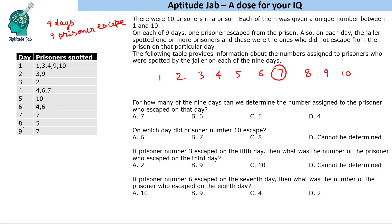Now if you look at the 8th day, prisoner 5 was spotted. That means 5 will not escape on the 8th day, but 5 has to escape because all others have escaped the prison. So 5 will escape on the 9th day.